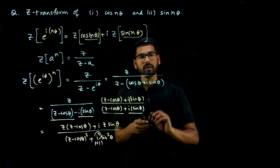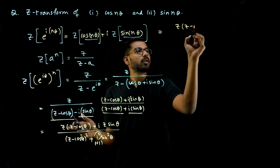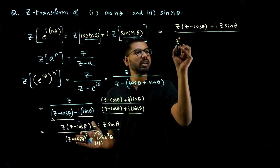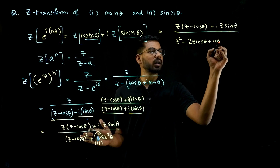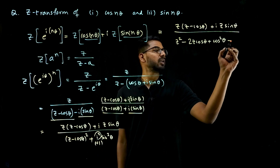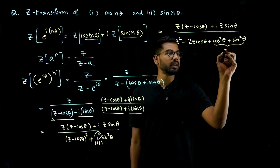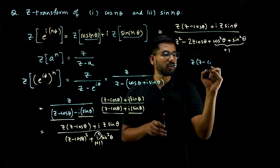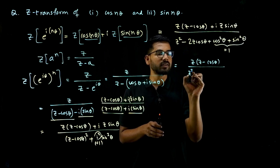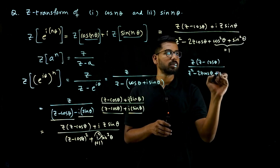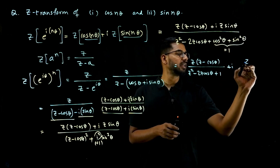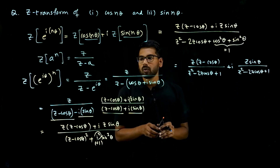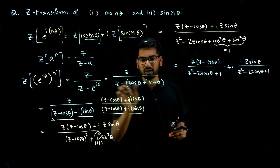After simplification, Z{e^(iθ)^n} equals z(z minus cos(θ)) over (z² minus 2z·cos(θ) plus 1), plus i times z·sin(θ) over (z² minus 2z·cos(θ) plus 1). Using the identity (a minus b)² = a² minus 2ab plus b², and cos²(θ) plus sin²(θ) = 1, we arrive at this clean a plus ib form.